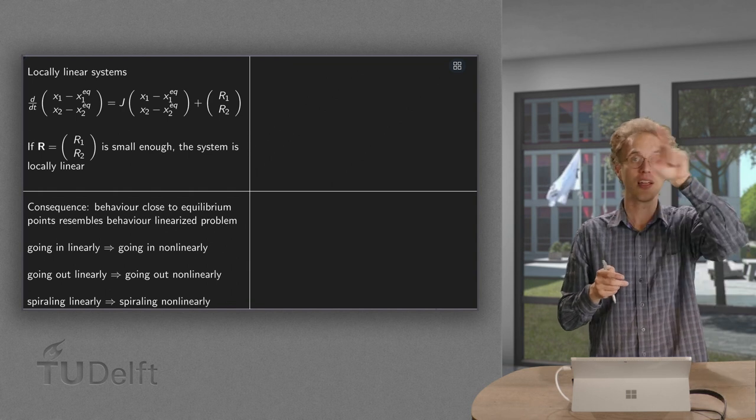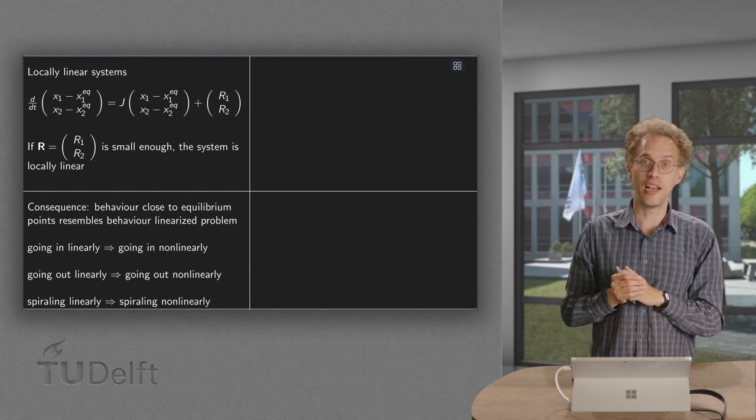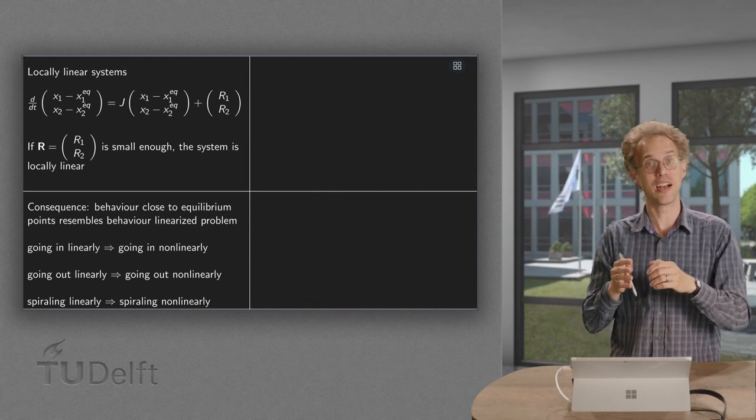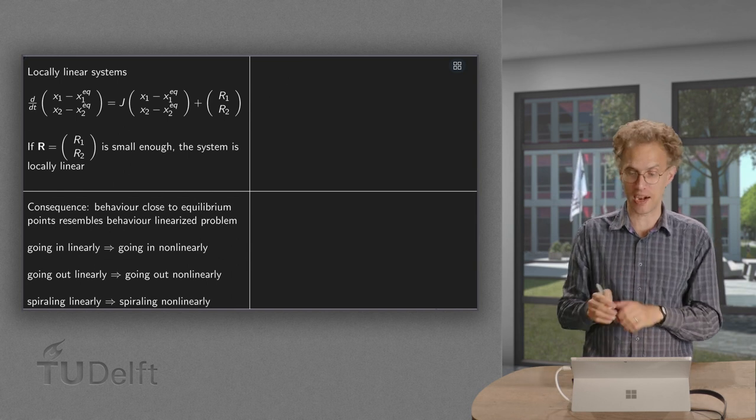And if you are spiraling about a point linearly, then non-linearly more or less the same happens again around our equilibrium point, and we will also be spiraling.